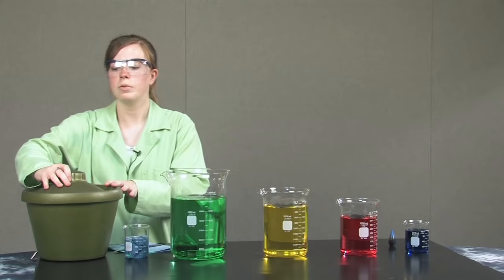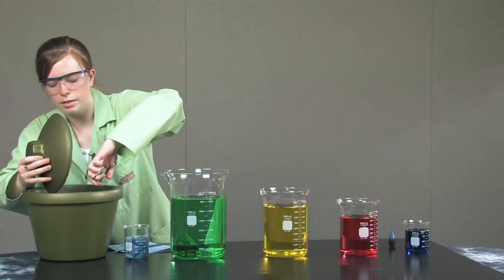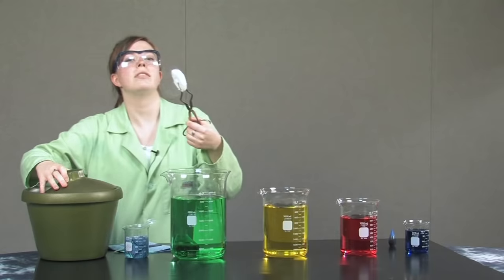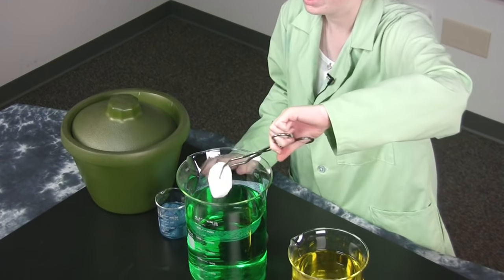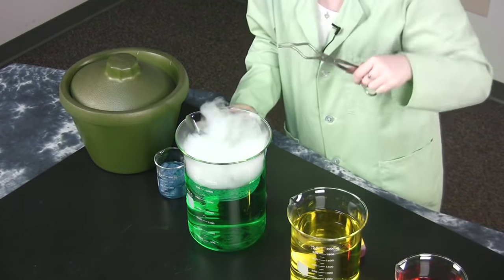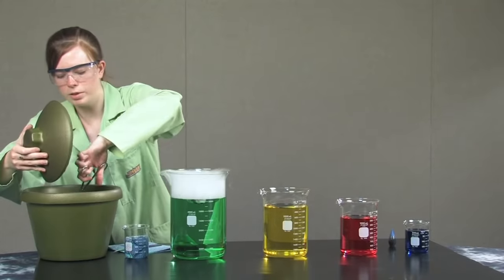Next, I am going to add some dry ice. Dry ice is the solid form of carbon dioxide. It is negative 78 degrees Celsius and it sublimes at room temperature, which means that it goes from a solid to a gas. I am going to add some to each beaker.